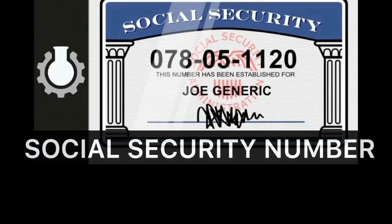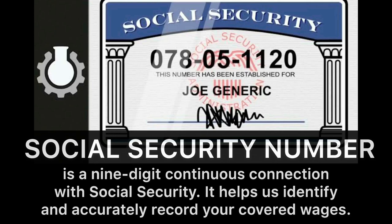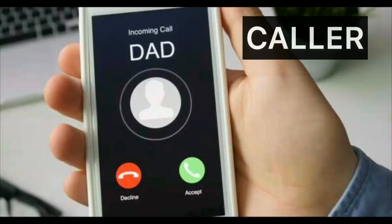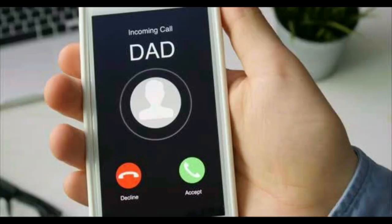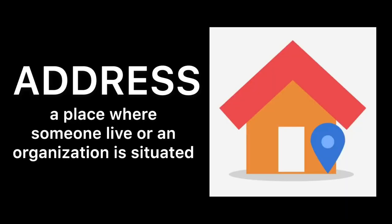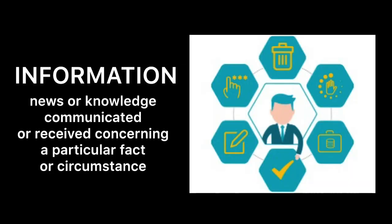Social security number is a nine-digit continuous connection with social security. It helps us identify and accurately record your covered wages. Caller: a person who makes a telephone call. Address: a place where someone lives or an organization is situated. Information: news or knowledge communicated or received concerning a particular fact or circumstance.